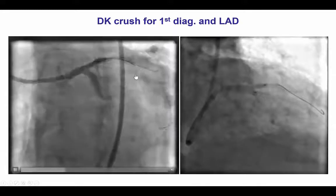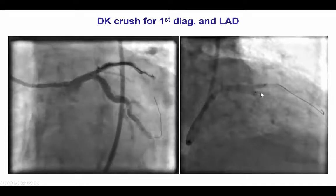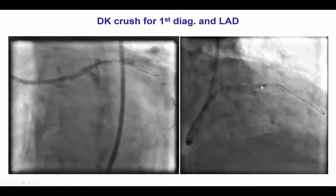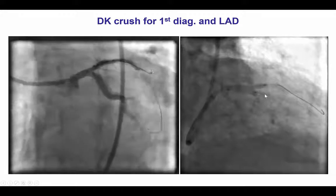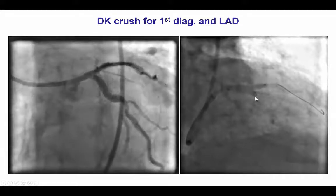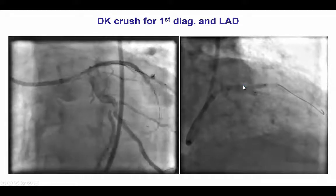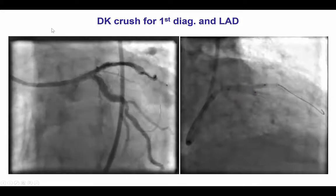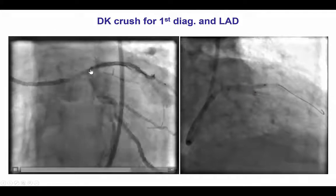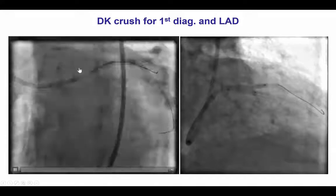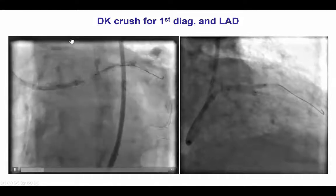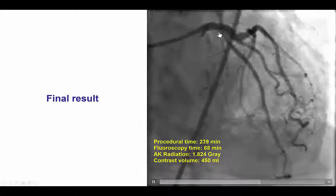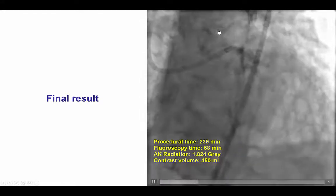We then advanced another stent into the LAD and deployed it. The diagonal was re-wired and we performed the second kiss inflation by doing high pressure inflation first in the side branch, then the main branch, and then both together. We made sure that the stent in the proximal LAD did not extend into the left main, as seen on the injection. By doing this we achieved a nice angiographic result.